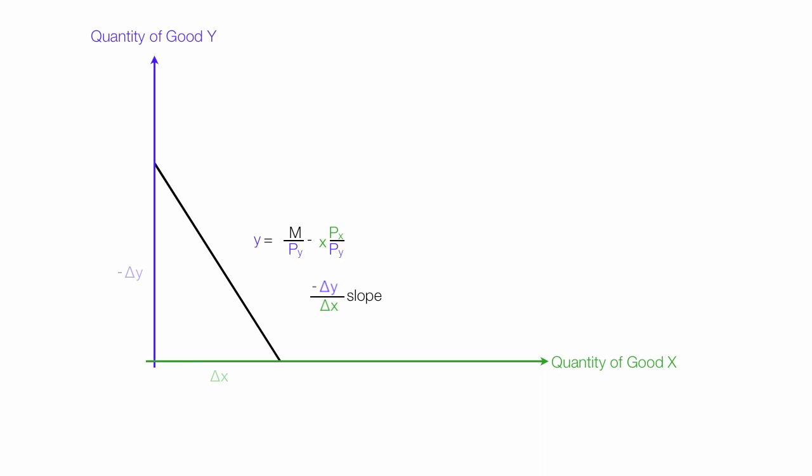The slope is also equal to the price of X divided by the price of Y, negative. In reality, these negative signs will cancel each other out, and so often you'll see in economics textbooks those negative signs are not included.